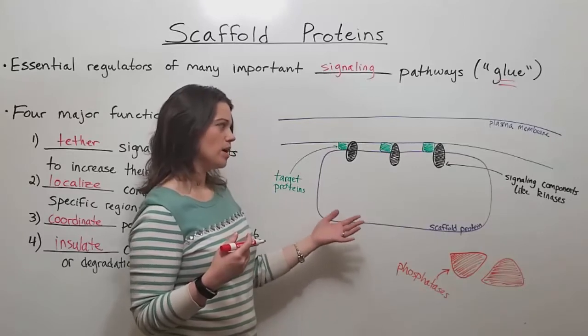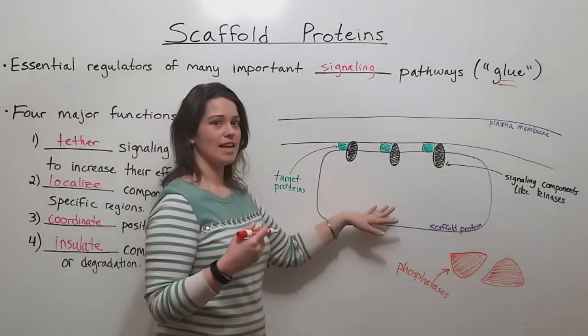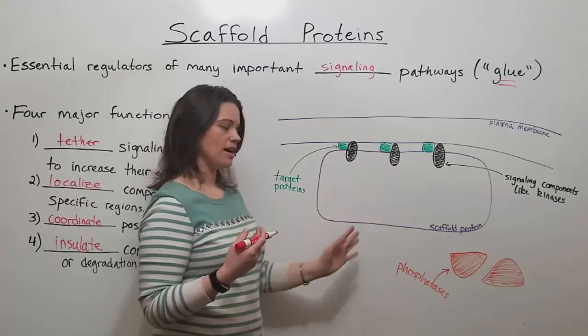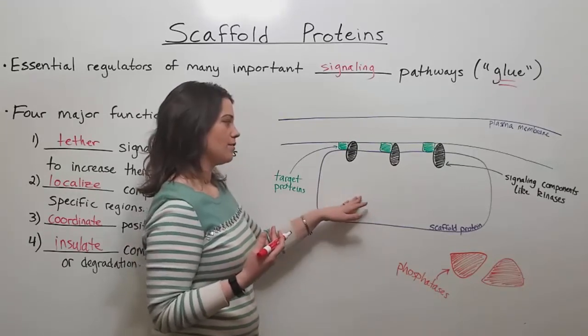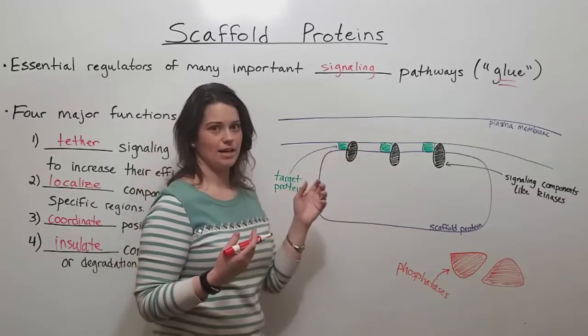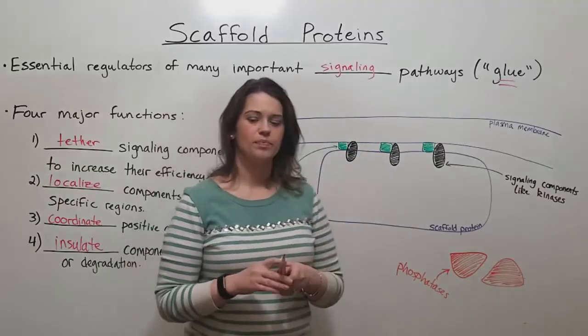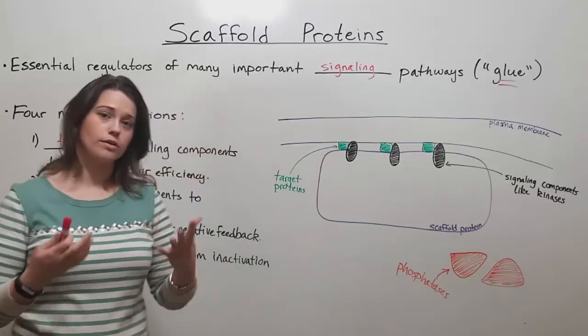Studies show that kinases interacting with scaffold proteins are much less likely to be dephosphorylated by phosphatases. These scaffold proteins can help protect signaling components and ensure that they can do their job and not be inactivated. Those are the four main functions of scaffold proteins.